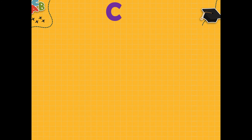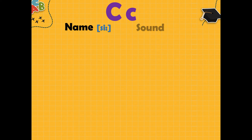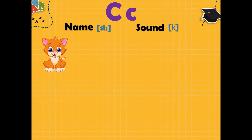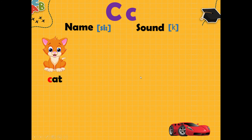Next letter is C. Big C and small c. The name of this letter is C, but this letter gives sound K. Let's see examples. What is it? It is cat. K, cat.